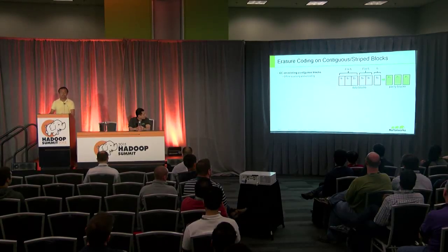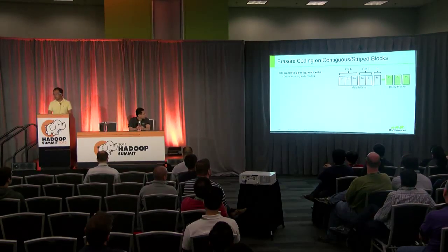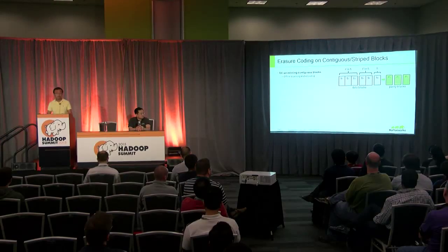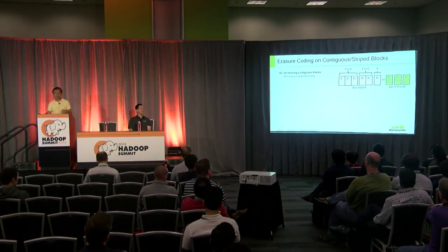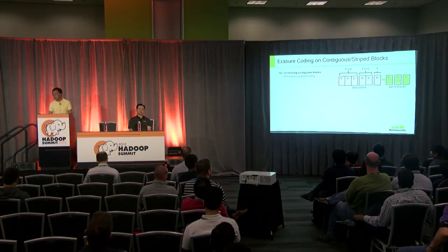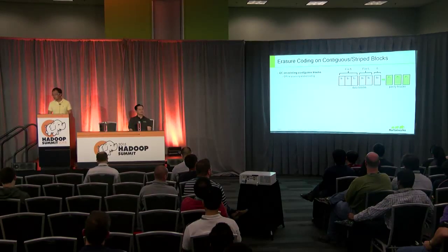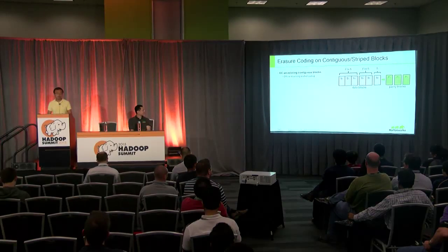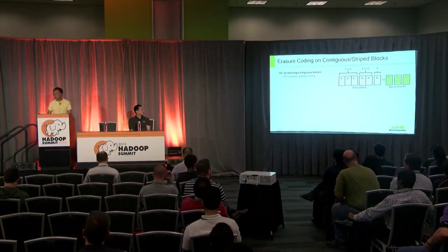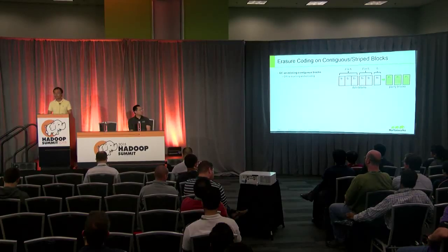How do we integrate erasure coding into HDFS? The most straightforward strategy is to directly apply erasure coding on existing contiguous blocks. With three files totaling six blocks, we bind them as a block group, apply the encoding algorithm, generate three parity blocks, and associate them with the data blocks. This has been done before in HDFS RAID, which set up a separate daemon or service for offline scanning and encoding.